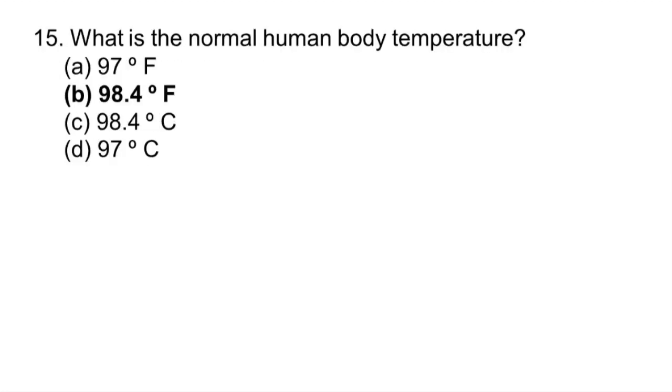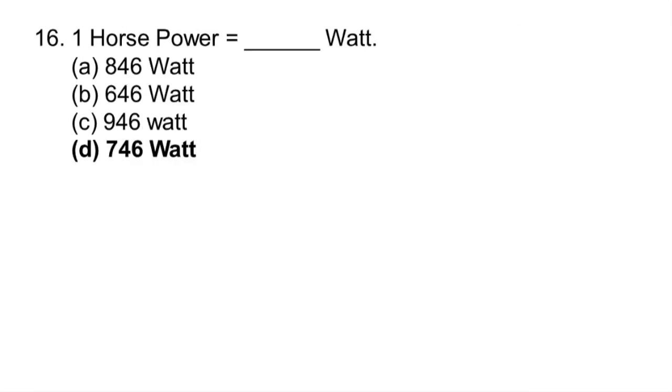What is the normal human body temperature? 98.4 Fahrenheit. One horsepower is 746 watts.